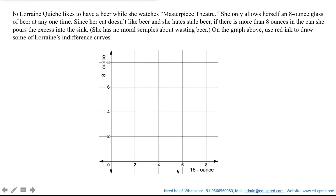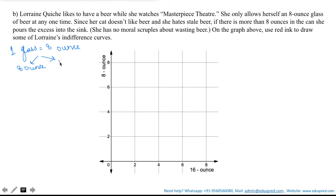Note that unlike Shirley, Lorraine is really concerned that she only wants to have 8 ounces of beer at one time. It does not matter whether she is using a 16-ounce can or an 8-ounce can. Suppose on this evening she only has one glass of beer — so she has only 8 ounces. She has two options: whether to use an 8-ounce can or a 16-ounce can. If she uses an 8-ounce can, she would need only one can — that would be a point on the Y-axis, using one 8-ounce can and no 16-ounce can.